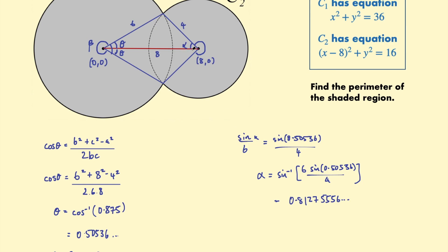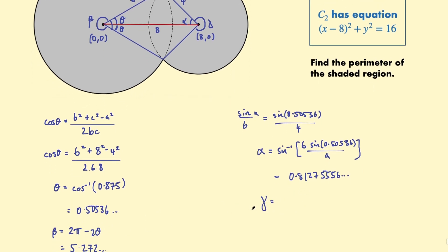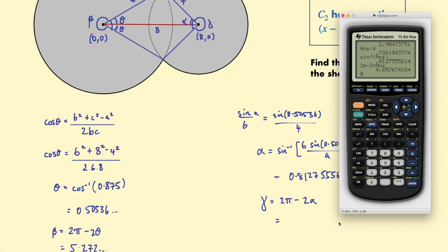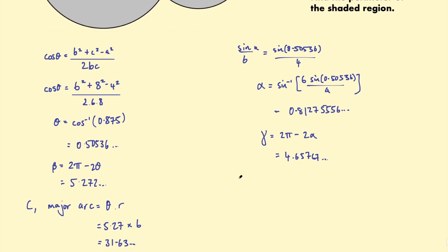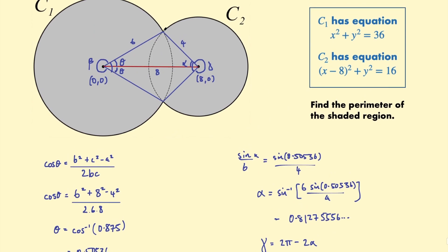Okay so that's alpha and to work out this larger angle let's call that gamma. Gamma is going to be the same thing as we did here. The number of radians in a circle subtract 2 lots of alpha because we want that entire angle there. So 2 alpha 2π - 2α and I get 4.657 and so on. Okay so that's that larger angle and to find the major arc of the smaller circle. Again use the arc length formula in radians so that's the angle. So gamma times the radius 4.657 multiplied by 4 which is the radius of the smaller circle. Let's go ahead and calculate that. I get 18.63 and so on.